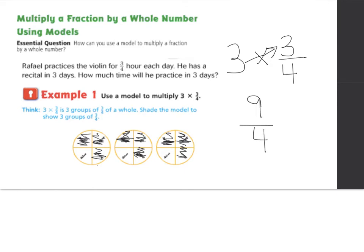So we know nine-fourths is actually a fraction greater than one, so let's rename this into a mixed number. We ask ourselves, how many times does four go into nine? We know four goes into nine two times with one left over, for a total of two and one-fourths hours of practice.